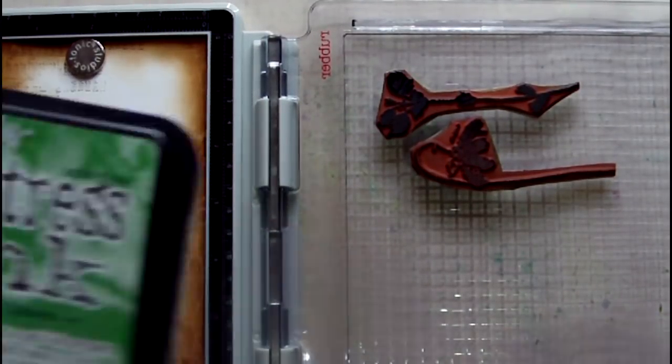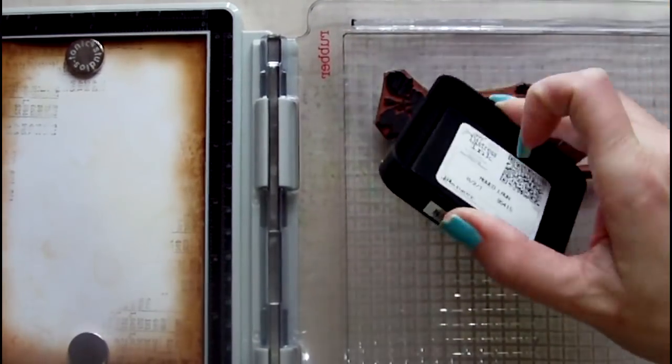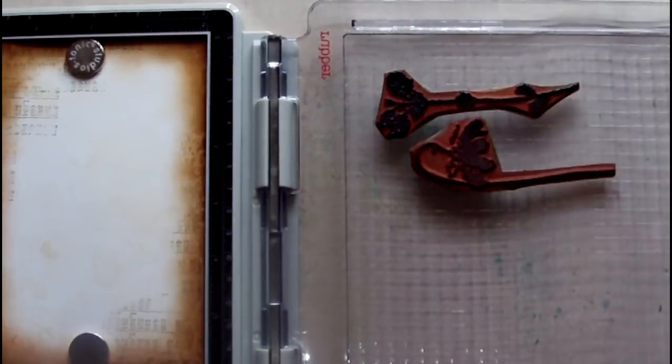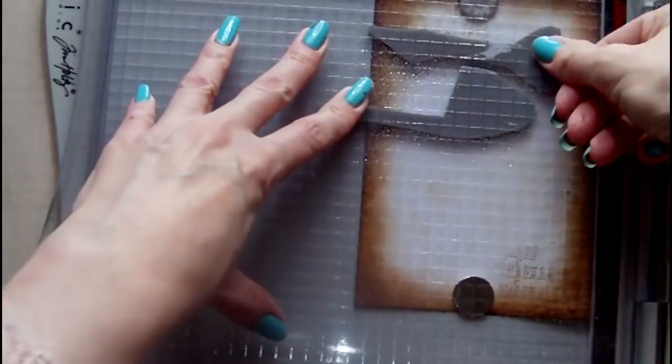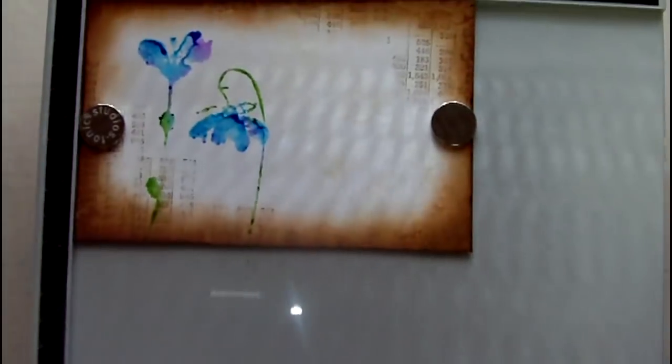I'm applying three different Distress Inks. The flower colors are Salty Ocean and Wilted Violet, and the stems are in Mowed Lawn. Before I'm stamping them, I'm spritzing them with water so that I can create a watercolor effect.